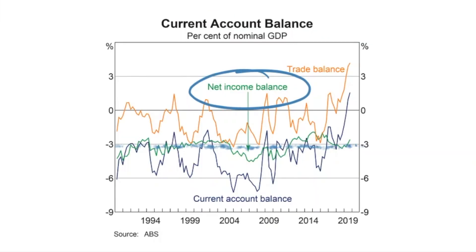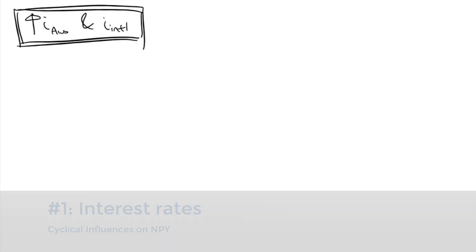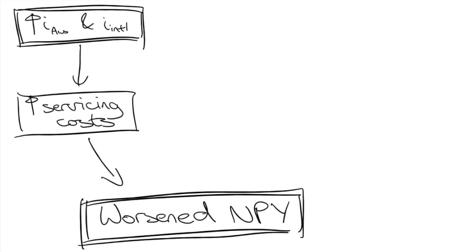While the NPY deficit hovers around the 3% mark, you could observe that there are small fluctuations that correlate with economic activity, suggesting that there are cyclical influences too. Interest rates are an important cyclical factor. If Australian and global interest rates increase, the interest paid going overseas to service existing foreign liabilities will increase, which contributes to a worsened NPY deficit.